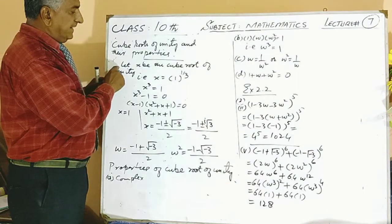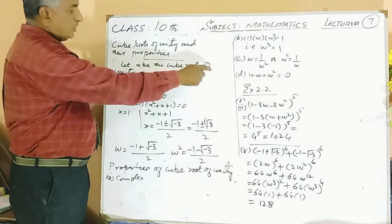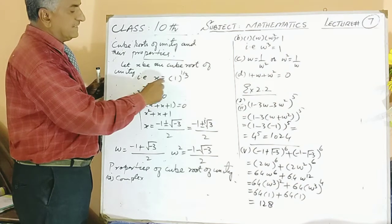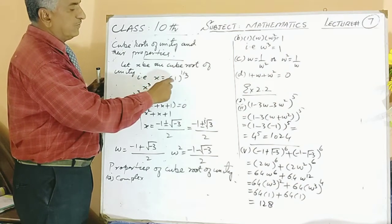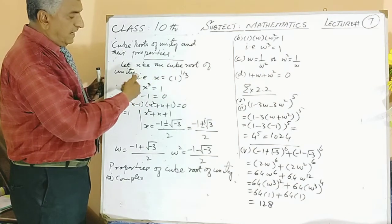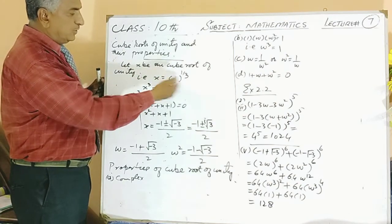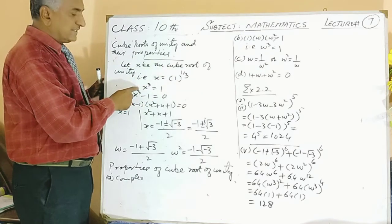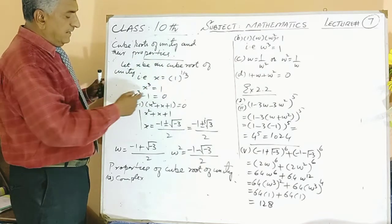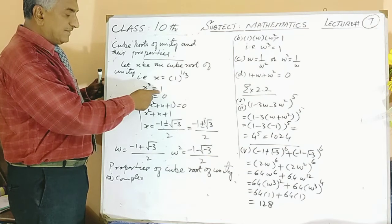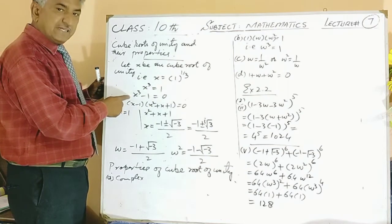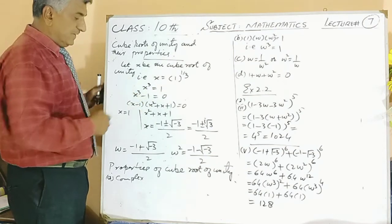Let x be the cube root of unity, then x is equal to 1 raised to the power 1/3. After taking cube on both sides, you will get x³ = 1, and when you bring this 1 towards the left, it becomes x³ minus 1.